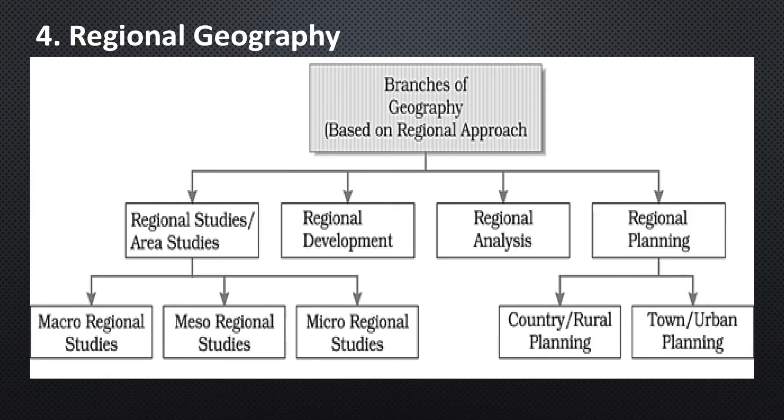The fourth branch of geography is regional geography. Regional geography is a study of world regions. Attention is paid to unique characteristics of a particular region such as its natural elements, human elements and regionalization, which covers the techniques of delineating space into regions. Regional geography breaks down into the study of specific regions, that is regional studies or area studies, which comprises macro, meso and micro regional studies. Next is regional development, regional analysis and regional planning, which comprises country, rural and town or urban planning.